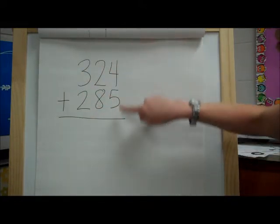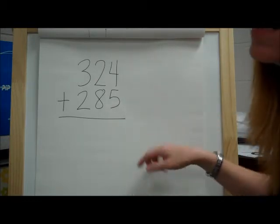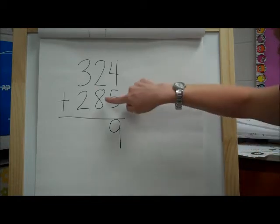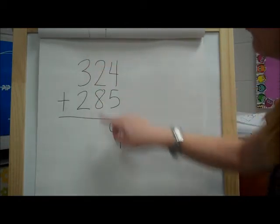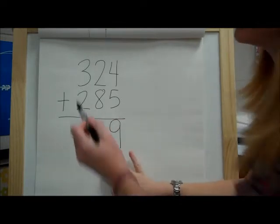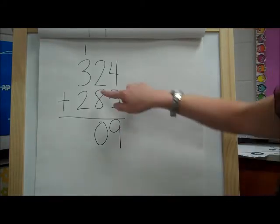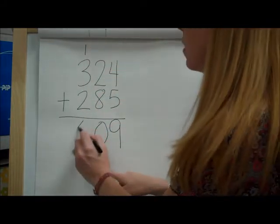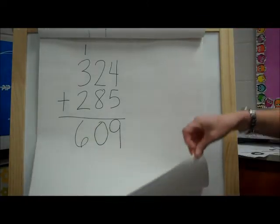All right, starting with the ones place. Five plus four—you can say the answer with me. Five plus four is nine. Now there's no regrouping on that one, so I don't have to worry about that. Eight plus two is ten. Now I've got to regroup because there's a digit in the tens place. So I'm going to put the one up here and the zero right there. And then two plus one is three. Three plus three is six. All right, so hopefully you got the same answer I did. All right, let's do another one.